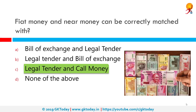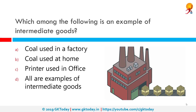Which among the following is an example of intermediate goods? The correct answer is coal used in a factory. Intermediate goods — also called producer goods or semi-finished products — are partly finished goods used as inputs in the production of other goods. Coal in a factory can be used as fuel to create something else, or to generate electricity, making it an intermediate good.